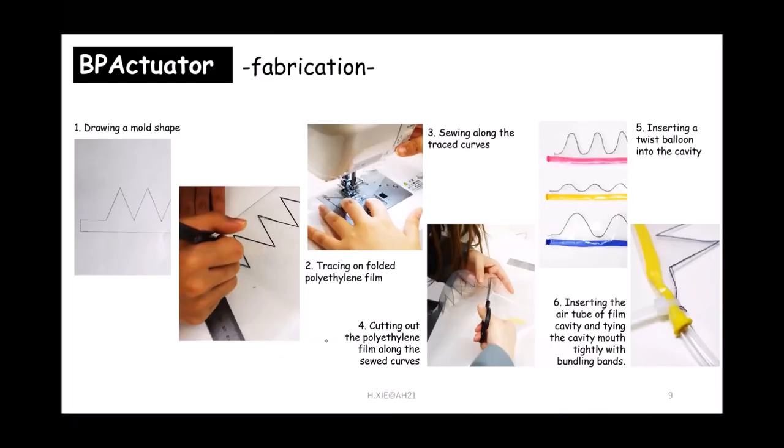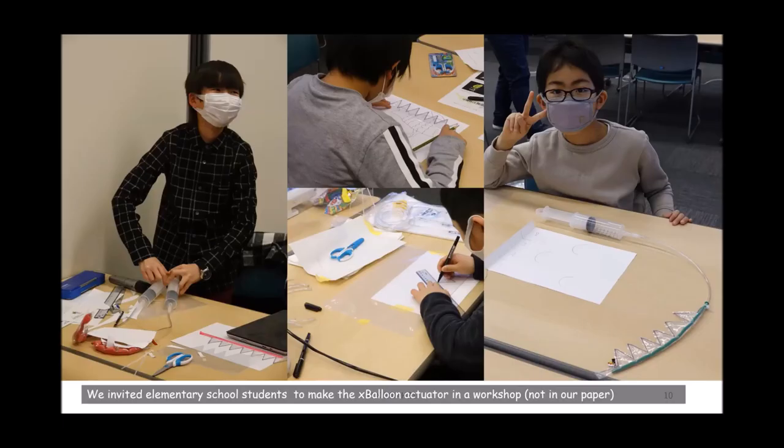As I introduced before, we only need six steps. We need one paper. You draw the model shape on the paper. Then you just design any shape by a marker pen. It can be a triangle or any colors that you want to design. Then you use the sealing machine to seal them together and cut it. Finally, you insert the balloon inside, and then you tie it with some bounding band. So it's done. Actually, we also invited elementary school students to make this because we want to verify it's actually easy to build. We found that they can even make it by themselves, and they also have different ideas to make something quite interesting.